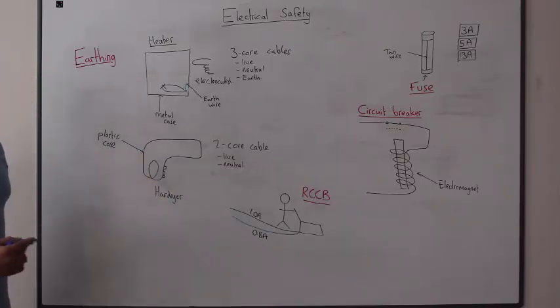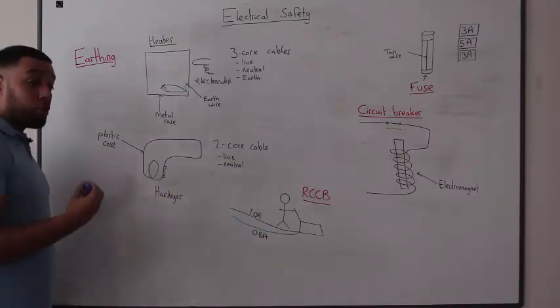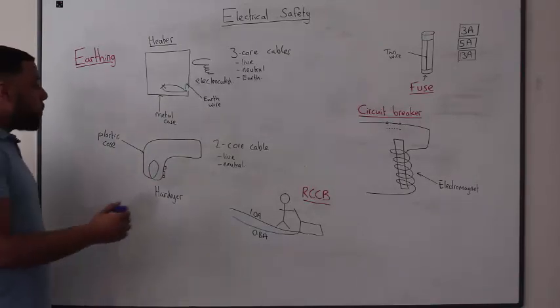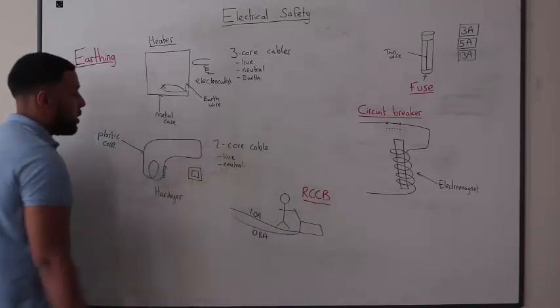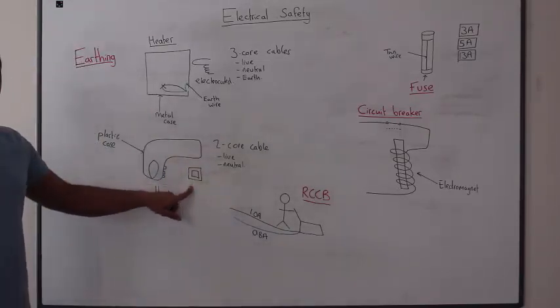We say appliances with a plastic case are doubly insulated, and we represent that using a square with a smaller square inside of it.